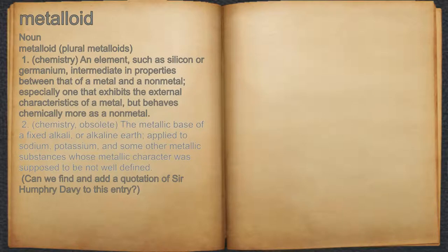2. Chemistry. Obsolete. The metallic base of a fixed alkali, or alkaline earth, applied to sodium, potassium, and some other metallic substances whose metallic character was supposed to be not well defined.